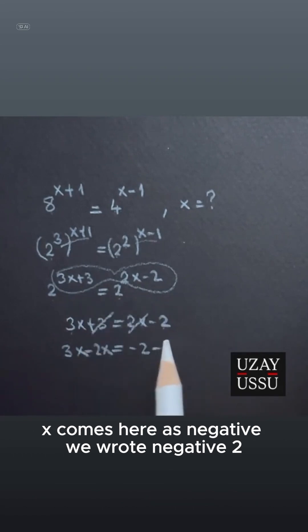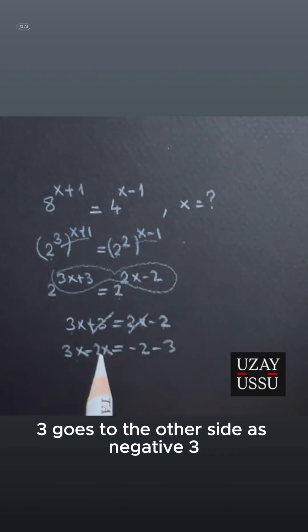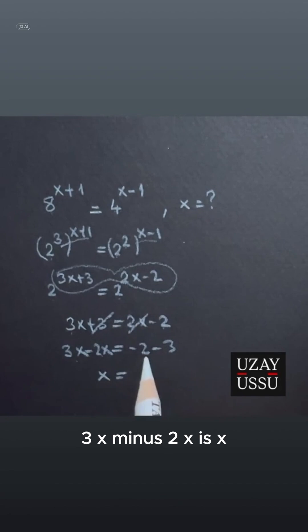Negative 2, 3 goes to the other side as negative 3. 3x minus 2x is x, and negative 2 minus 3 is negative 5, which is the value of x.